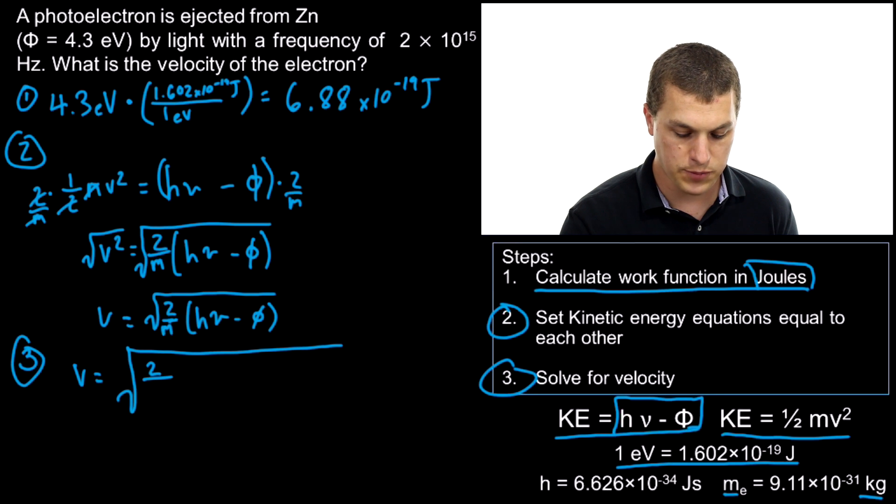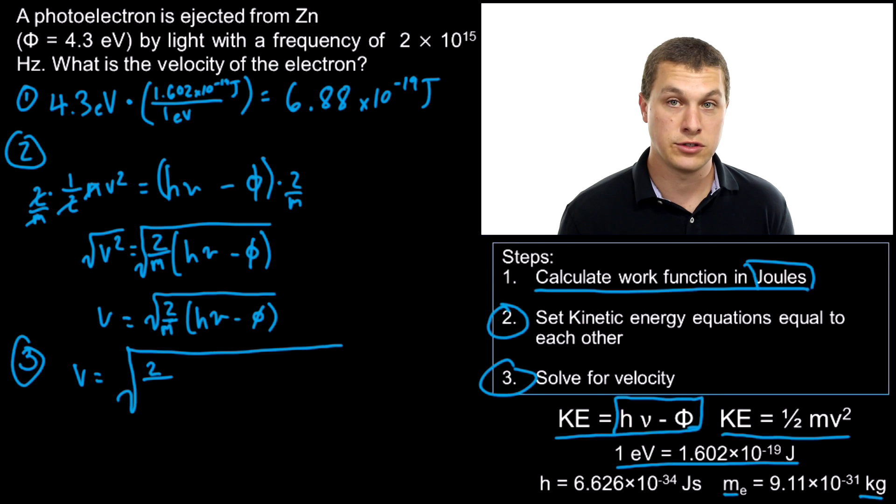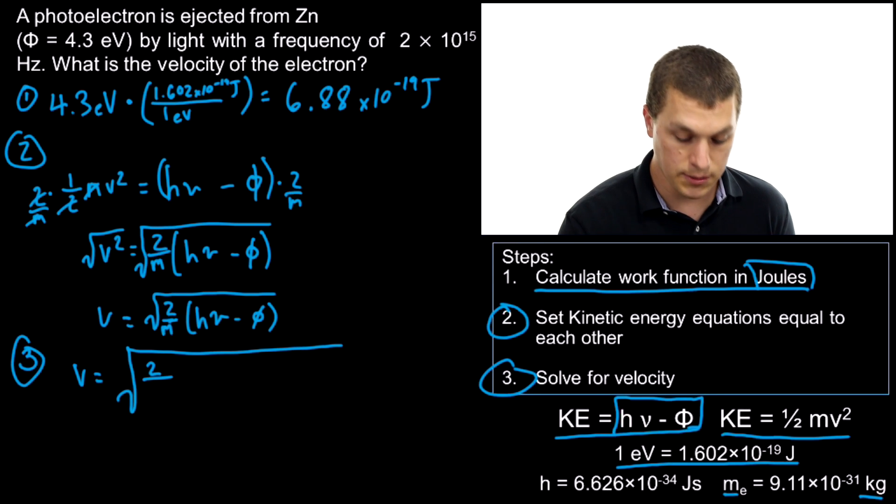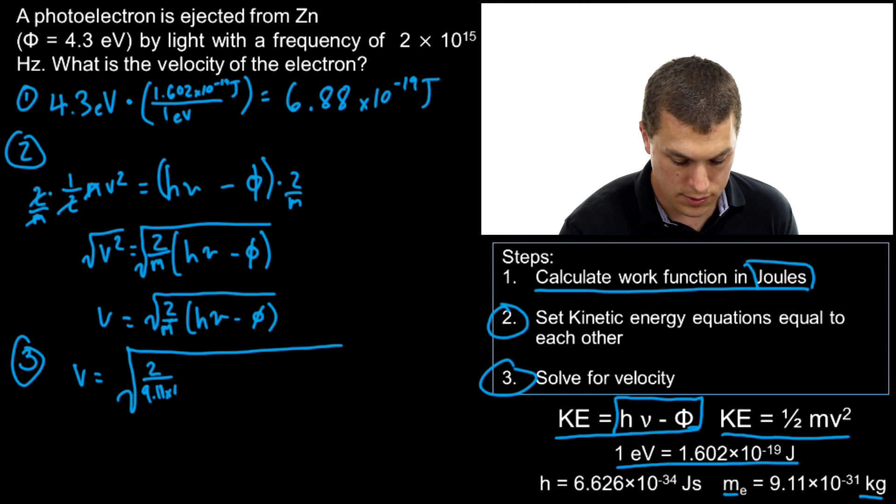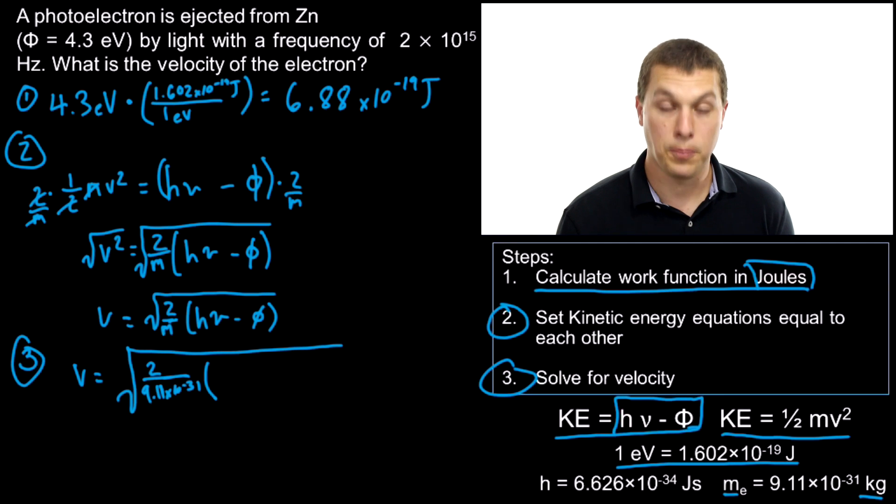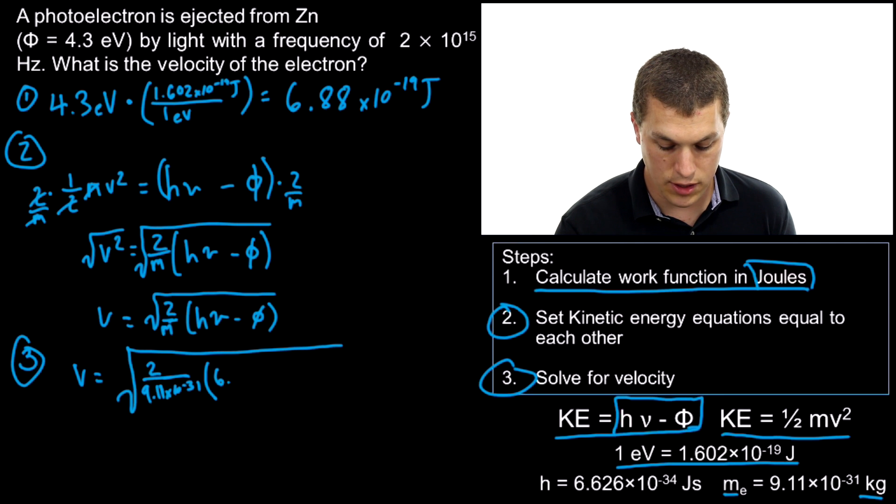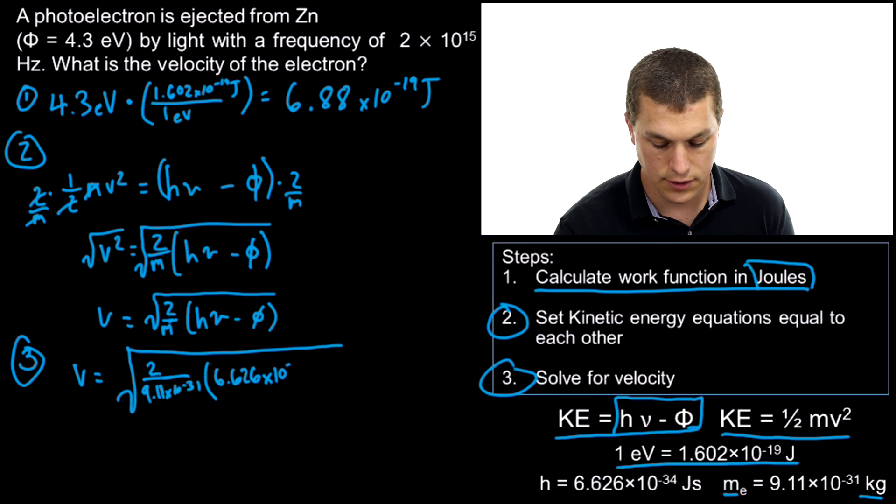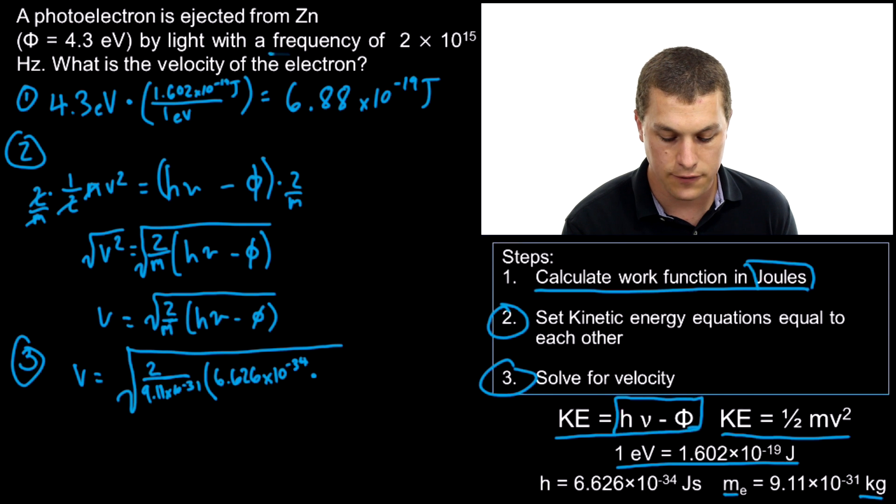Sometimes when you get this problem, you'll get different units than what I've shown you here. You just need to make sure that when you plug them in, your mass is in kilograms. Your Planck's constant, which I have written over there on the bottom right, is 6.626×10⁻³⁴ J·s. Then we multiply by our frequency. What's our frequency? It told us way back in the problem: 2×10¹⁵ Hz.